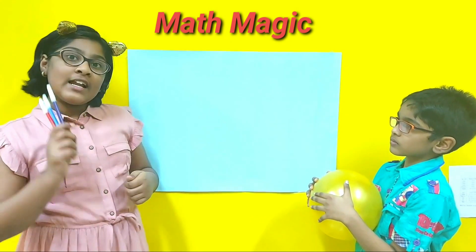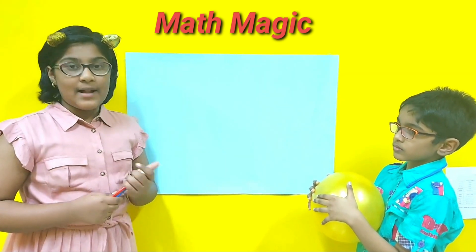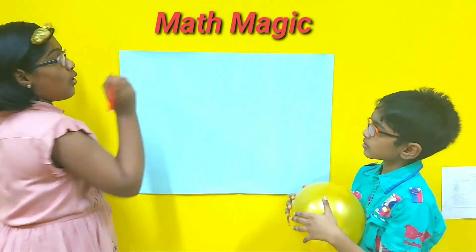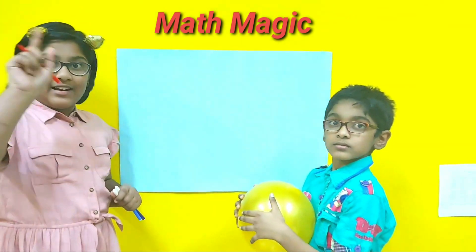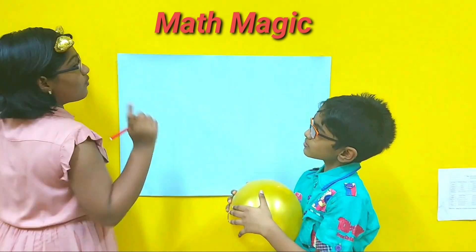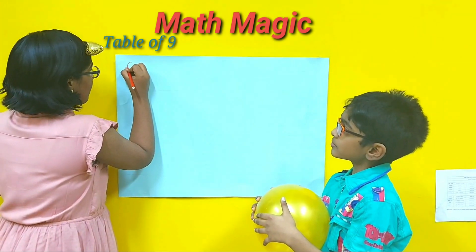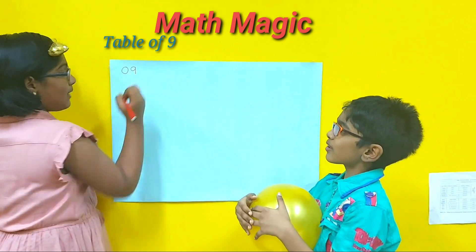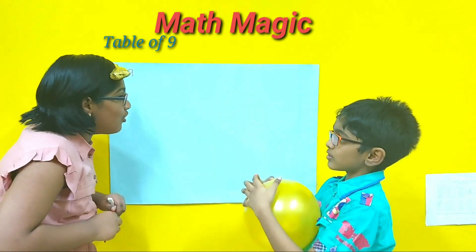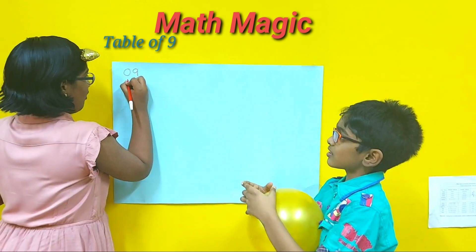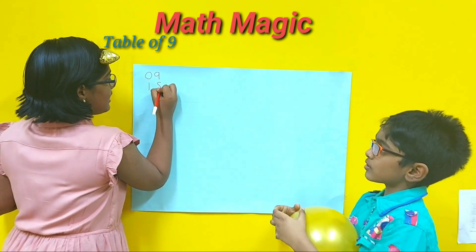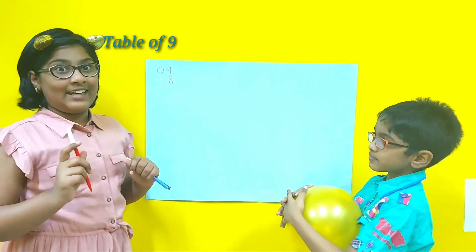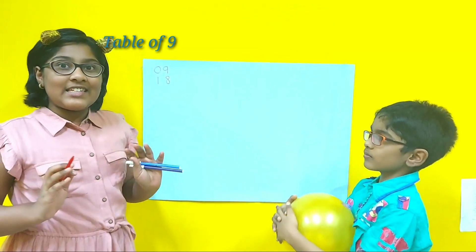So now our random number is 95. For doing the multiplication, first we write the table of 9. As we need 2-digit numbers, we will write 09. So 9 into 1 is 9, while writing 0 because we need 2-digit numbers. So 9 into 2? 18. My teacher taught me a trick which will be very easy for the 9 table.